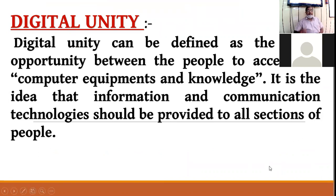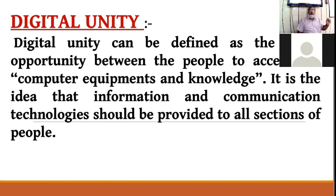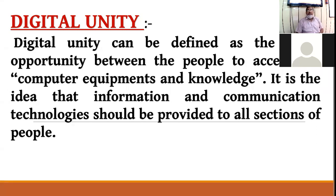Digital unity: resources should be equitably distributed with no discrimination. Equal division of resources must be there; equal use of technology must be there. All modern technology facilities must be equally used by all sectors of society. If one sector is getting internet facility, the other should also avail that facility. This is digital unity — only then can we say our society is fully balanced, resources are maximally utilized, and there is equal distribution between rural and urban sectors with no discrimination.